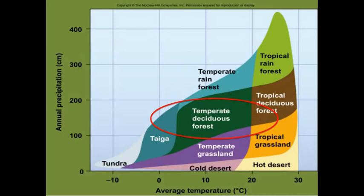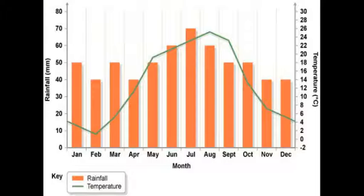Temperate deciduous forests experience four changing seasons and receive adequate amounts of rainfall each year, ranking just behind rainforest biomes. The average year-round temperature is 50 degrees Fahrenheit. Summer temperatures fall around 70 degrees. Winter can bring snowfall in the more northern habitats, but amounts vary heavily.